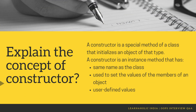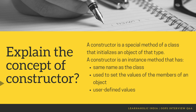The next question is: explain the concept of a constructor. A constructor is a special method of a class that initializes an object of that type. A constructor is an instance method that has the same name as the class. A constructor is used to set the values of the members of an object, and these values are user-defined. A constructor is a special method that is used to initialize a newly created object and is called just after the memory is allocated for the object. It can be used to initialize the object to desired or default values at the time of object creation.